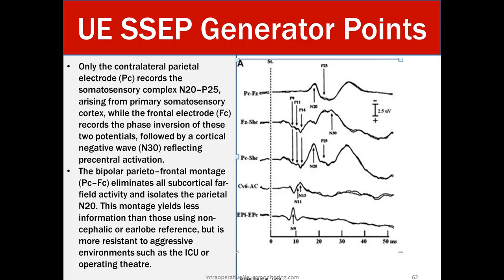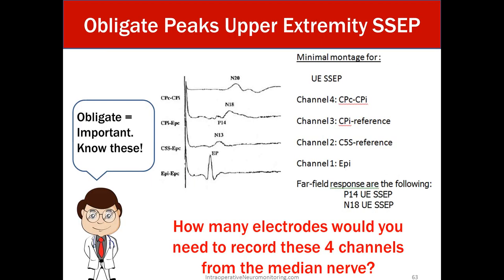According to guidelines, obligate peaks for upper extremity SSEP include: the CPC (contralateral to ipsilateral) montage giving a clean N20 bipolar with no far fields; the CPI (parietal ipsilateral to contralateral ERBs) picking up far-field subcortical P14 and N18; the cervical response from C5 spine referenced to contralateral ERBs point; and ERBs point ipsilateral to contralateral.